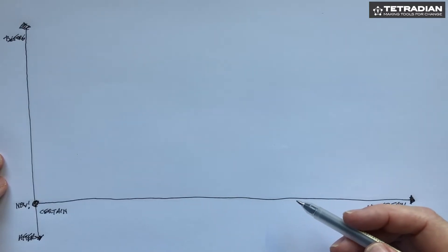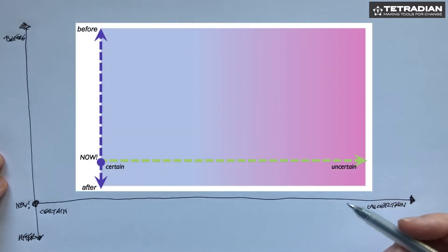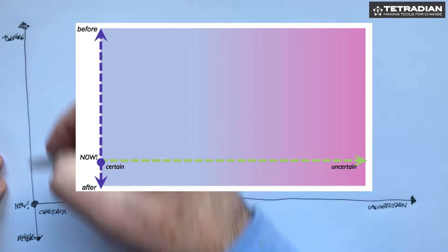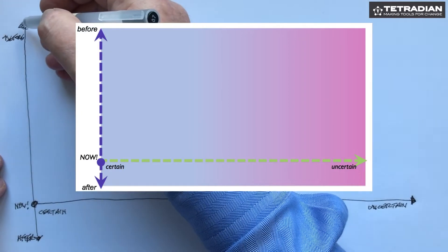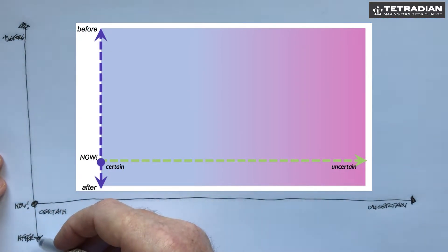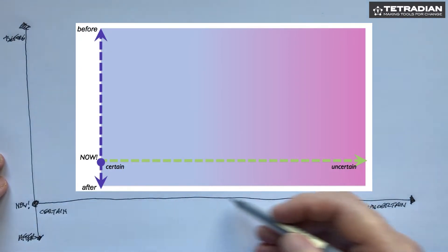In a previous video we introduced the framework called SCAN, which is a very simple way to make sense of complexity. It's just two axes relative to a given now: how much time we have before and after, and also the extent to which it's certain or uncertain, predictable or unpredictable, same or unique.